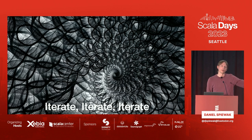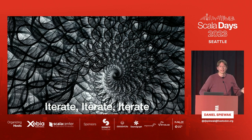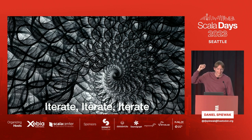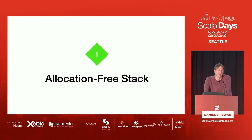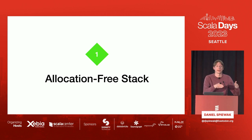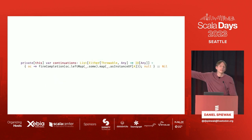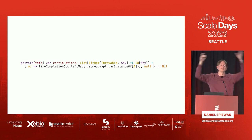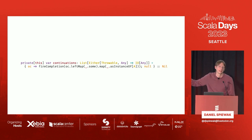All of the disclaimers are out of the way. Now it's time to iterate — we're going to make five optimizations, walk through what we're doing, why it makes things better, and show the results. Optimization number one: allocation-free stack. At the heart of the IOFiber is the continuation stack, which is a list of Either[Throwable, Any] functions. This is allocations out of the wazoo — we're making so many objects just to have this stack. It would be nice to get rid of some of them. The very first allocation to think about is the list itself.